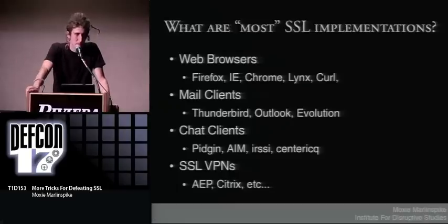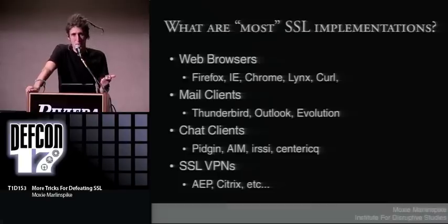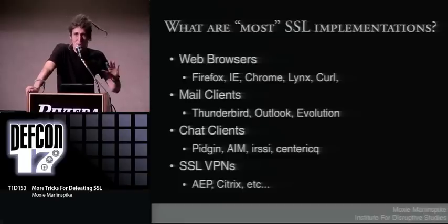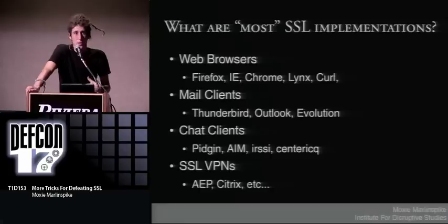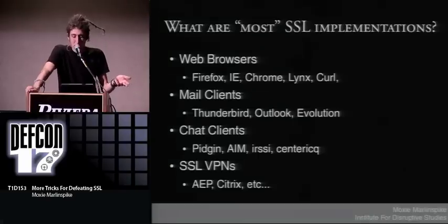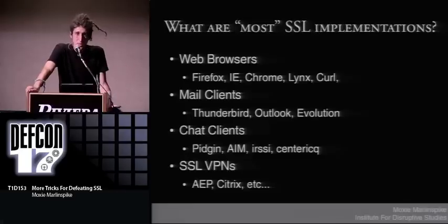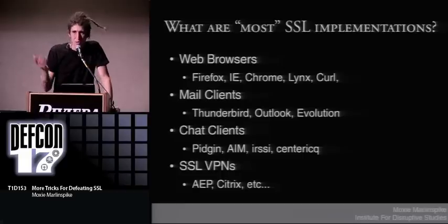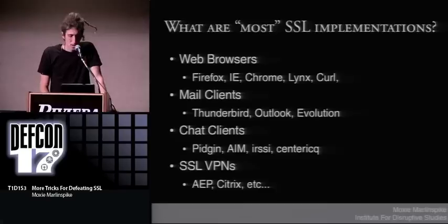What are most SSL implementations? NSS is vulnerable, the Microsoft Crypto API is vulnerable, GNU TLS is vulnerable — and that means all products that use those things are vulnerable. Every product that uses the Microsoft Crypto API is vulnerable to this attack. The popular ones: Firefox is vulnerable because it uses NSS; Internet Explorer is vulnerable because it uses the MS Crypto API; Chrome is vulnerable for the same reason. Also: Lynx, curl, Thunderbird, Outlook, Evolution, Pidgin, AIM, IRSSI, Centericq — even SSL VPNs are vulnerable, AEP, Citrix. I couldn't even test them all. Basically almost everything.